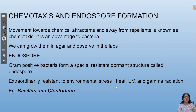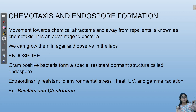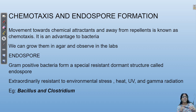Gram positive bacteria can form a special resistant dormant structure called an endospore. Endospores provide resistance to environmental stress, ultraviolet rays, and gamma radiation. Examples include Bacillus and Clostridium. This concludes the main topics on prokaryotic cell structure. In the next class, eukaryotic cells and their functions will be discussed, covering plant and animal cells along with metabolic pathways in organelles like mitochondria.